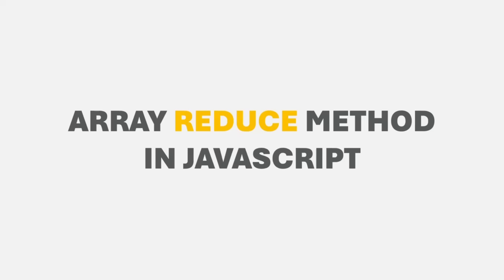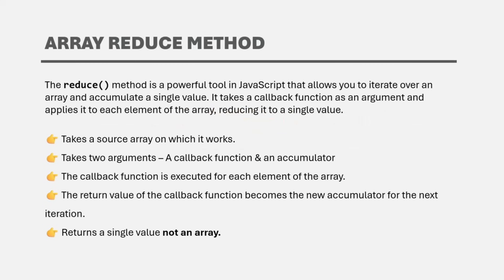In this lecture, we are going to learn about another transformation method in JavaScript called the reduce method. The reduce method is also used on an array. It is a powerful tool that allows you to iterate over an array and accumulate a single value. Unlike the map and filter methods, the reduce method does not return an array — instead, it returns a single value. This method also takes a callback function as an argument and applies it to each element of the array, reducing it to a single value.